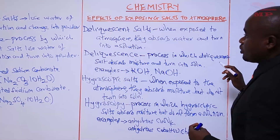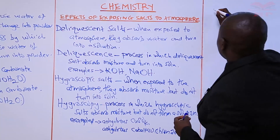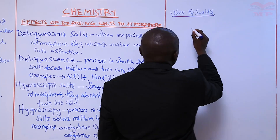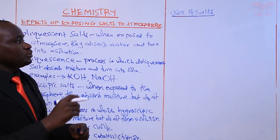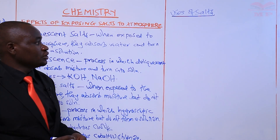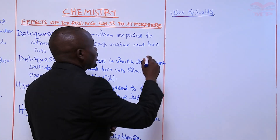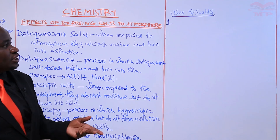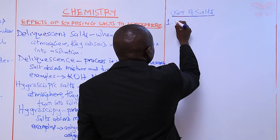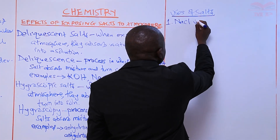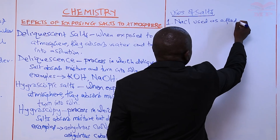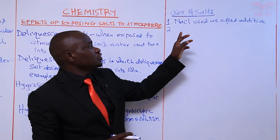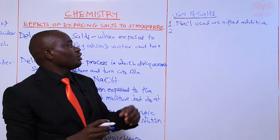We will finish by looking at the uses of salts. The first use: sodium chloride is used as a food additive.